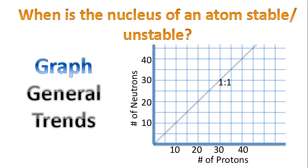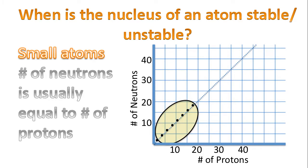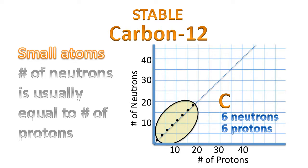We'll look at some very general trends, but remember there are always some outliers. Beginning with small atoms: usually when the number of neutrons is equal to the number of protons, the atom is stable. For example, carbon-12, which has 6 neutrons and 6 protons — that's stable. But carbon-14 is unstable: 8 neutrons compared to 6 protons. And carbon-10 is also unstable: 4 neutrons in comparison to 6 protons.